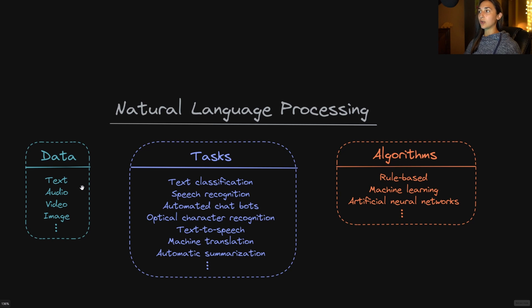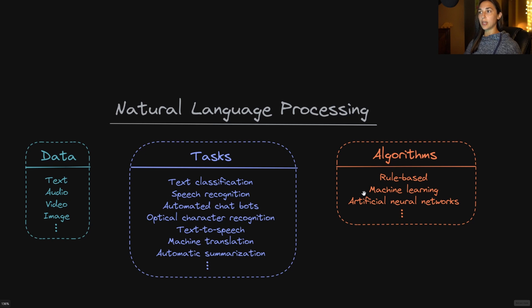Natural language can be captured in all of these different data types. In addition to the various tasks and data types in this field, we also have various algorithms to solve these tasks. Some of these algorithms are based on a rule-based approach, while others use traditional machine learning algorithms, and others make use of deep learning, which is a subfield of machine learning that uses artificial neural networks.